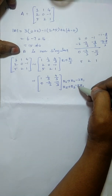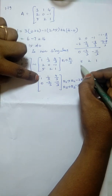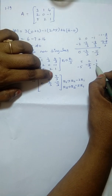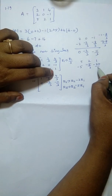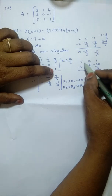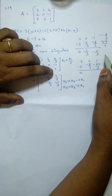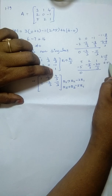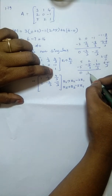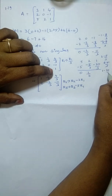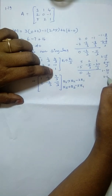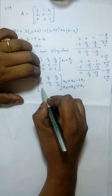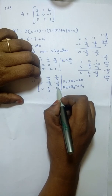R3 minus 5 times R1: 5 minus 5 = 0; 2 minus 5/3 = 6/3 minus 5/3 = 1/3; 1 minus 20/3 = 3/3 minus 20/3 = minus 17/3. So R3 becomes [0, 1/3, minus 17/3].